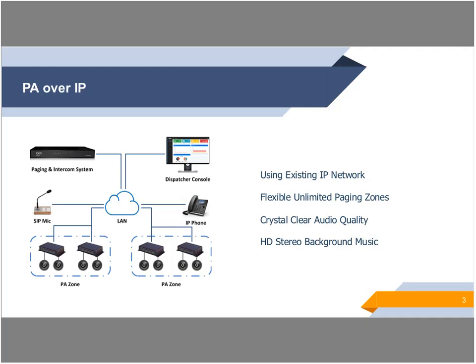Here is a diagram showing the basic principles of how it works. By using PA over IP, some key advantages include: it uses your existing IP network, so no extra wiring needs to be done. There is also no limitation on the number of paging zones — it's very flexible and the number of paging zones is unlimited. You also get crystal clear audio quality and excellent HD stereo background music on the SIP Paging and Intercom system.